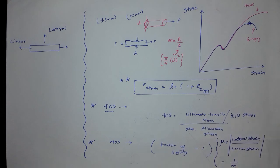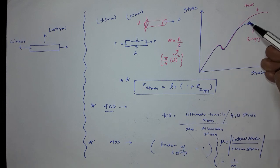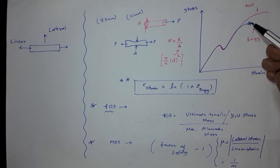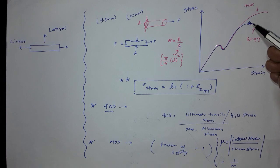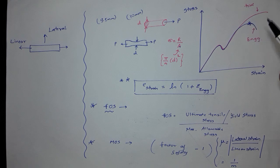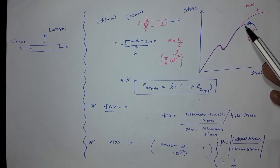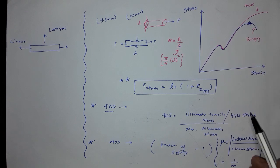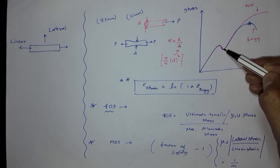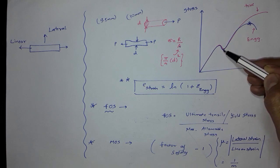For ductile material, the factor of safety is the yield stress upon maximum allowable stress. I will explain the meaning in a short video. Looking at the graph, the point I have indicated is the ultimate tensile stress point — this indicates the maximum stress the material can sustain without breakage. As a designer, we always design to a lower stress point. We consider the lower yield point and upper yield point, and we design to that point in the case of ductile material.